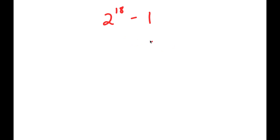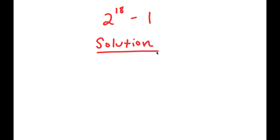All right, so in this problem I have 2 to the power of 18 minus 1. To solve this problem, for my solution, I'm going to first start by rewriting my problem. So I have 2 to the power of 18 minus 1.